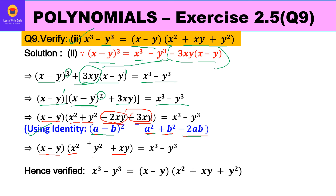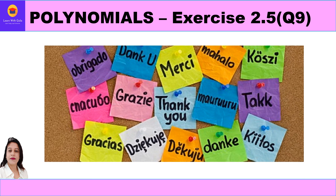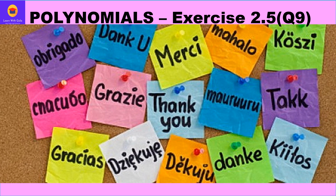Combining minus 2xy and plus 3xy gives plus xy. So we have (x minus y)(x square plus y square plus xy) equals x cube minus y cube, which is exactly what we needed to prove. Hope you have understood both parts of question 9. In the next video I will be taking question 10. Thank you everyone, have a great day ahead.